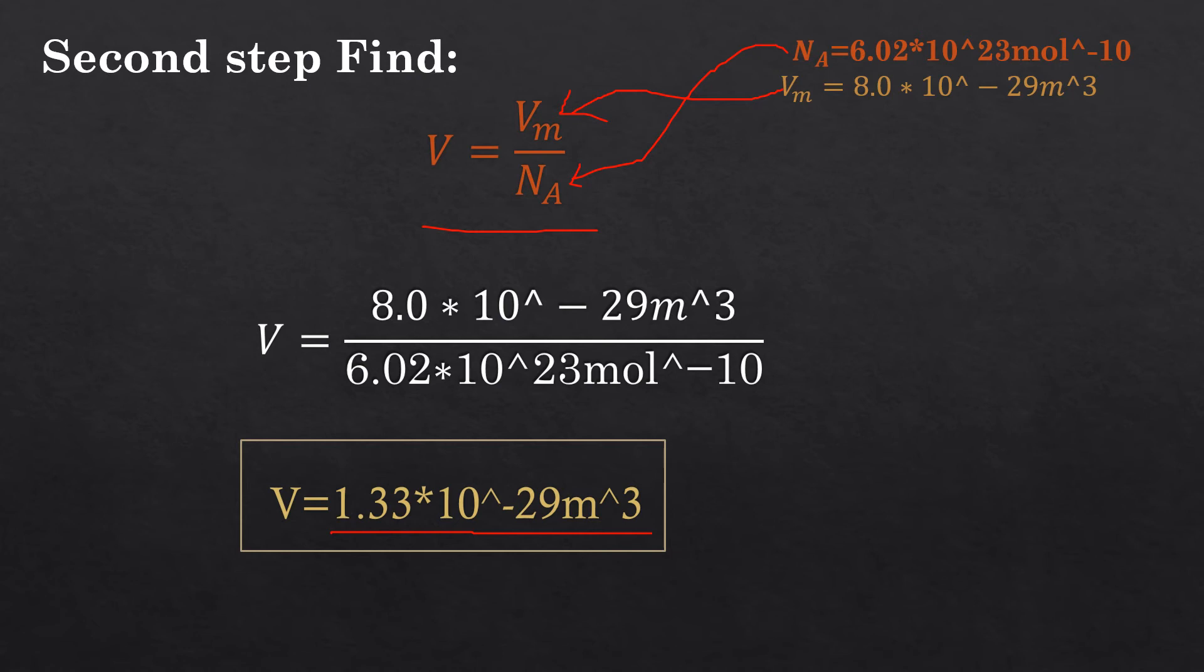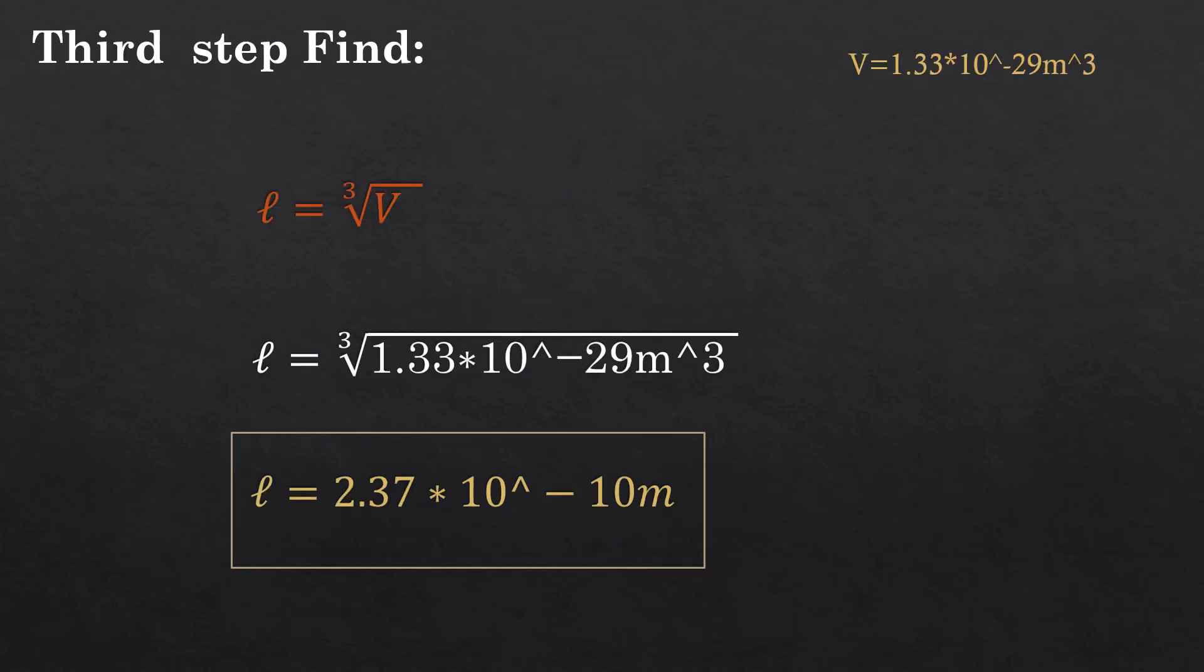Students, in the third step, find l, which is distance. Put V here and take the cubic root. l equals the cube root of 1.33×10⁻²⁹ m³. Using a calculator, we will find l, which is 2.37×10⁻¹⁰ m.